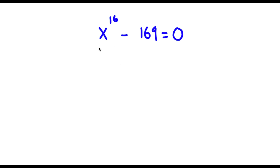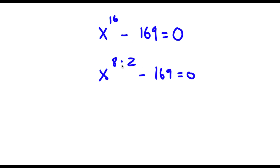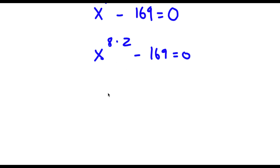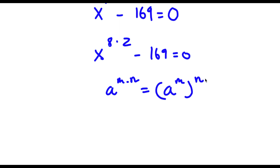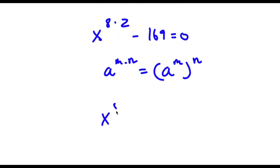Alright, so I have x to the power of 16 minus 169 is equal to 0. Now x to the power of 16 we can rewrite as x to the power of 8 times 2, because 16 is equal to 8 times 2. And if I have something in the form a to the power of m times n, this is the same thing as a to the power of m to the power of n. So x to the power of 8 times 2 equals x to the power of 8 to the power of 2. And 169 is the same thing as 13 to the power of 2.